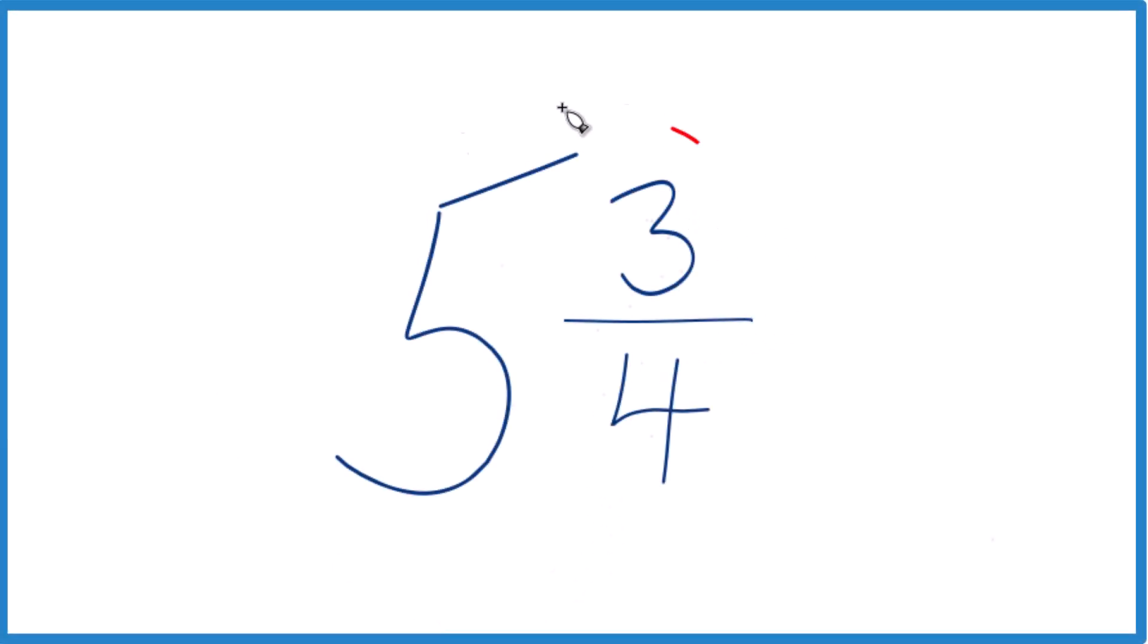If you're given the mixed number 5 and 3 fourths, and you want to get that to an improper fraction, here's how you can do it.